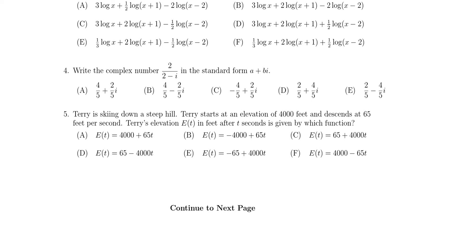In this video we provide the solution to question number four for the practice final exam for math 1050. We're given the expression 2 over 2 minus i. This is a complex quotient. We want to compute the quotient and write it in the standard form a plus bi.